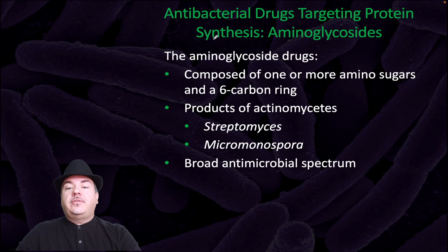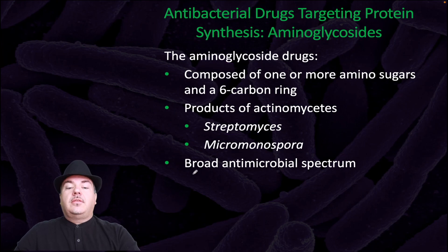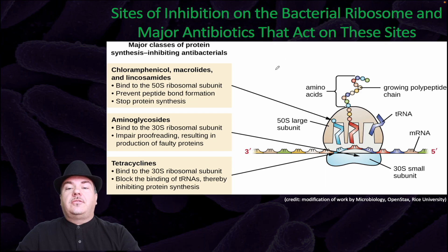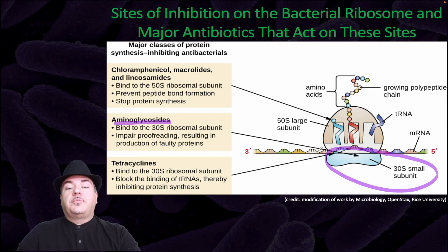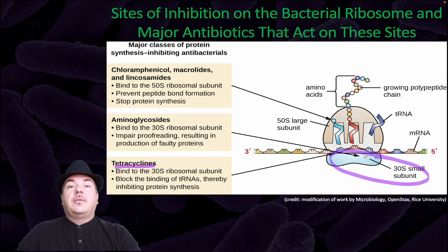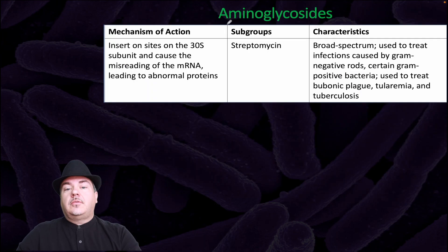Antibacterial drugs targeting protein synthesis include the aminoglycosides, which are composed of one or more amino sugars in a six-carbon ring and are products of actinomycetes such as Streptomyces or Micromonospora. They have a broad antimicrobial spectrum. Chloramphenicol binds to the 50S large subunit of the ribosome, preventing peptide bond formation and stopping protein synthesis. Aminoglycosides bind to the 30S small subunit, impairing proofreading and resulting in production of faulty proteins. Tetracyclines bind to the 30S ribosomal subunit and block the binding of tRNAs, thereby inhibiting protein synthesis.